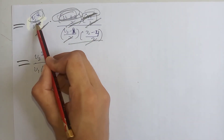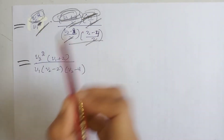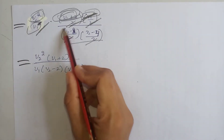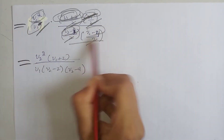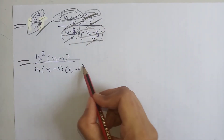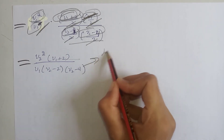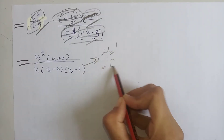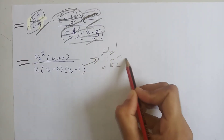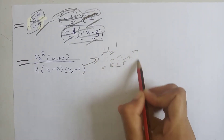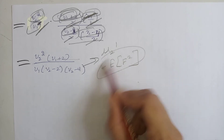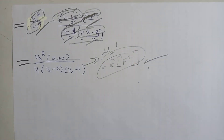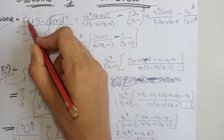After cancellation we are left with the remaining terms. Taking the LCM, the factors of 2 cancel with 2. This gives us μ₂ dash, which is the expectation of F squared.